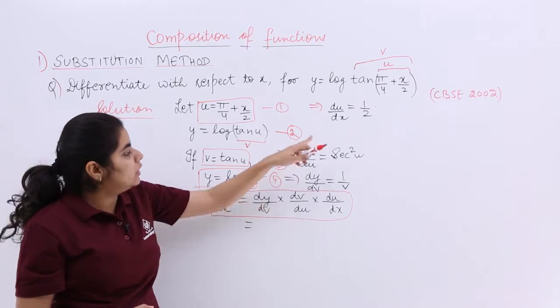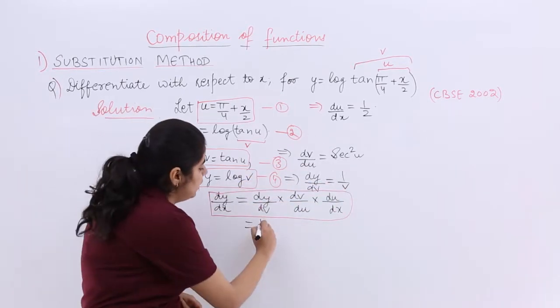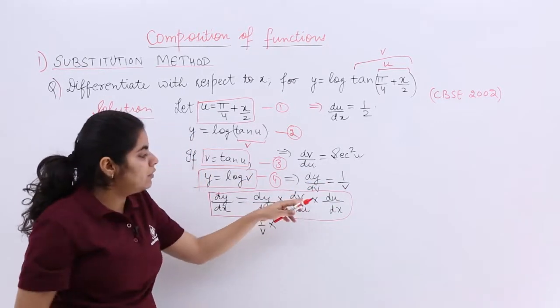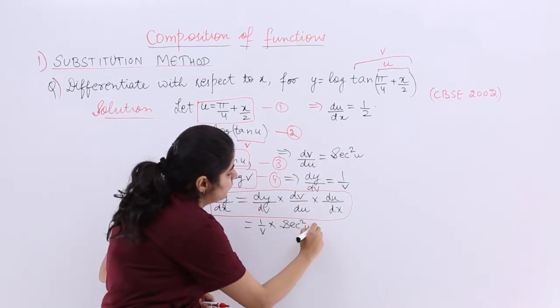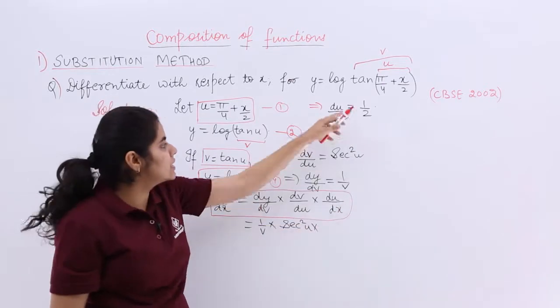So dy by dv, dy by dv is 1 by v. dv by du, dv by du is secant square u. du by dx is 1 by 2.